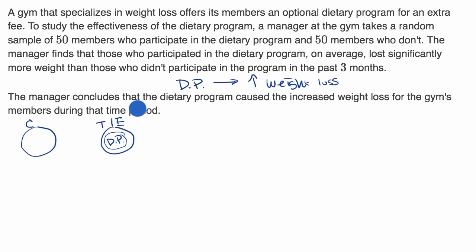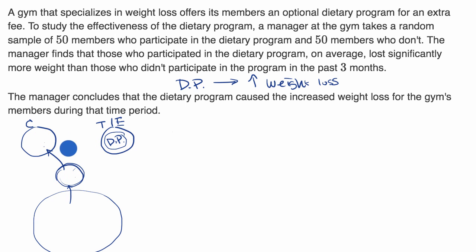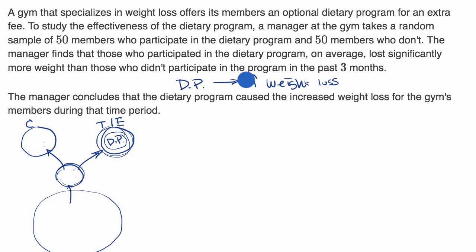This kind of looks like an experiment until you think about how folks were assigned to either group. A well-designed experimental study would take a random sample from the broader population and then randomly assign people to either the control or treatment group. The people in the treatment group — not people who chose to be in it — would be required to follow the diet. Then, if you see a statistically significant increased weight loss, you might be able to make this causal conclusion.